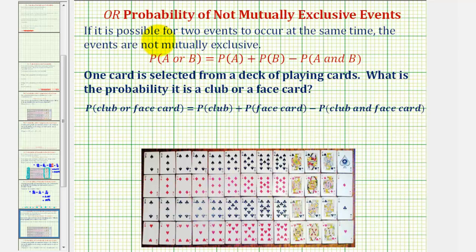Welcome to two examples of determining probability of events that are not mutually exclusive.